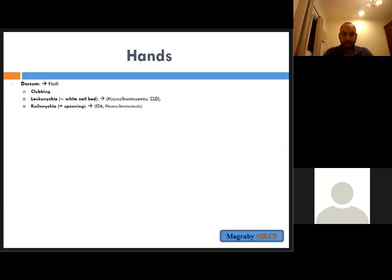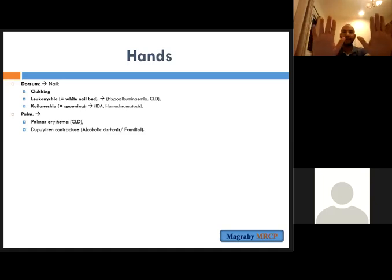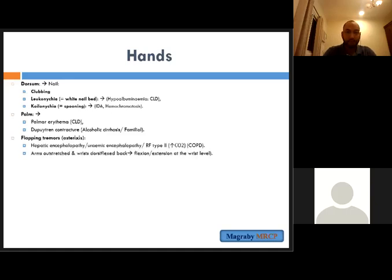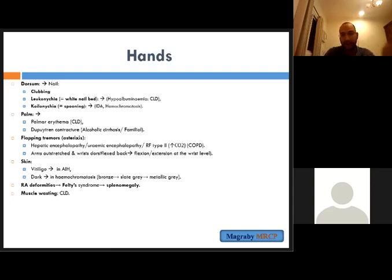For hand examination: check the nails for clubbing, leukonychia — white nails with hypoalbuminemia in chronic liver disease — koilonychia or spooning indicating iron deficiency anemia. Check the palm for Dupuytren's contracture and palmar erythema. Check hand extension for asterixis or flapping tremors. Check the skin — if you have vitiligo you can search for other autoimmune diseases in this patient. If the patient has a dark color you can think of hemochromatosis, mostly secondary hemochromatosis due to blood transfusion. If you see rheumatoid hands think about Felty's syndrome: seropositive rheumatoid arthritis plus leukopenia plus splenomegaly.